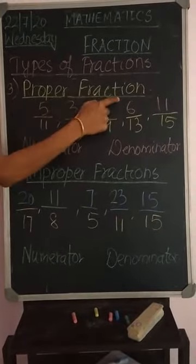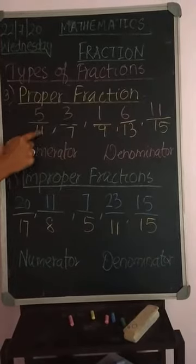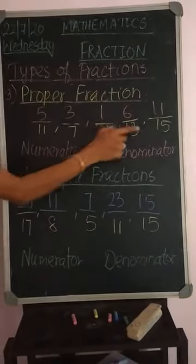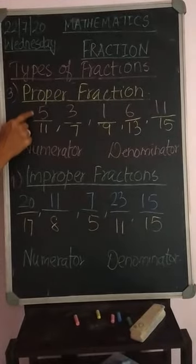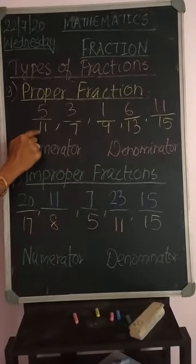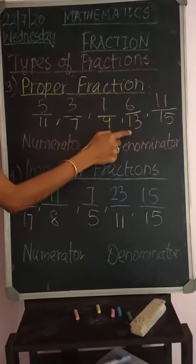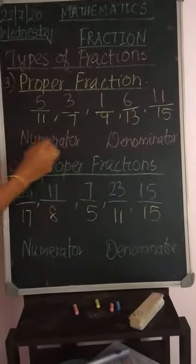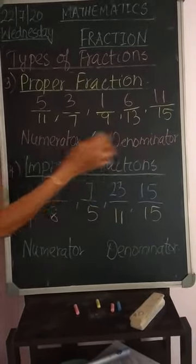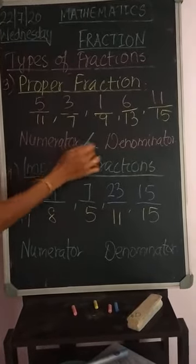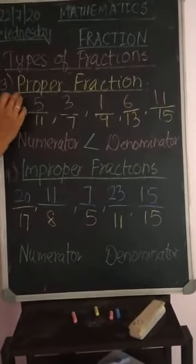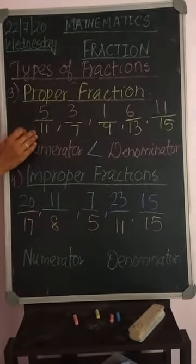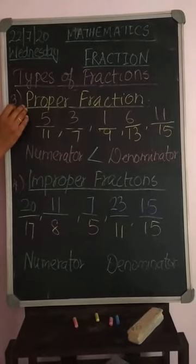Can you observe and tell what is the relation between numerator and denominator? See: 5 by 11, 3 by 7, 1 by 9, 6 by 13, 11 by 15. All numerators are less than the denominators. A fraction where the numerator is less than the denominator is called a proper fraction. To identify a proper fraction, check if the numerator is less than the denominator.